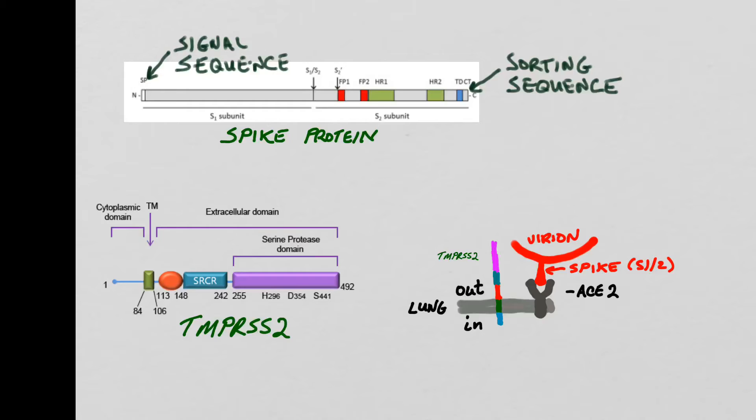Moving on to the TMPRSS2, here's the schematic diagram for it, and one thing that I could tell you about it that's not going to mean anything yet but will soon is that it's a type 2 transmembrane protein. If I had five more minutes to talk about co-translational translocation on Thursday, then I would have talked about the so-called type 1 and type 2 transmembrane proteins, and you would know just from that designation that there is no signal sequence.